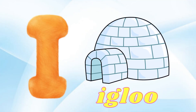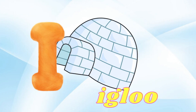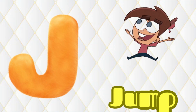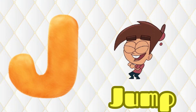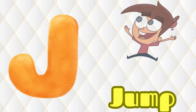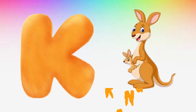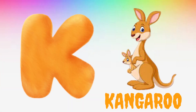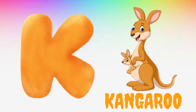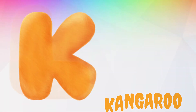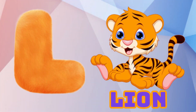I is for Igloo, I-I-Igloo. J is for Jump, J-J-Jump. K is for Kangaroo, K-K-Kangaroo. L is for Lion, L-L-Lion.